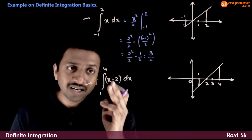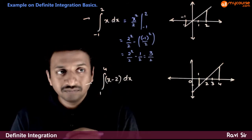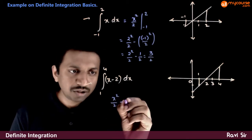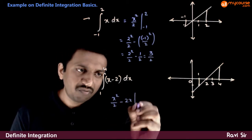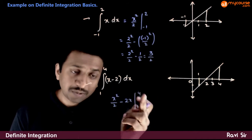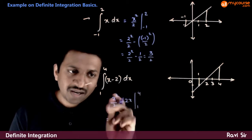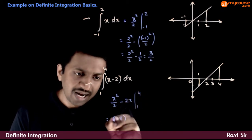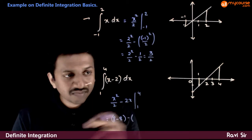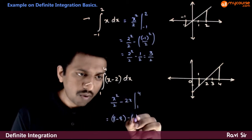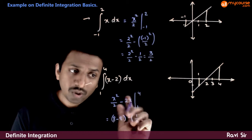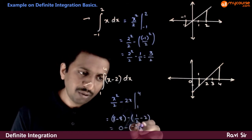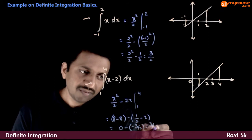And what is the integration of x minus 2 between 1 and 4? The integration of x is x square by 2, minus integration of 2 is 2x, between 1 and 4. Substituting the upper limit: 4 square is 16 by 2 is 8 minus 2 times 4 is 8. Then put 1: 1 by 2 minus 2 into 1 is 2.